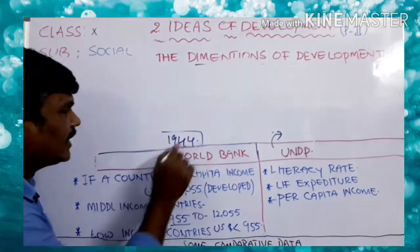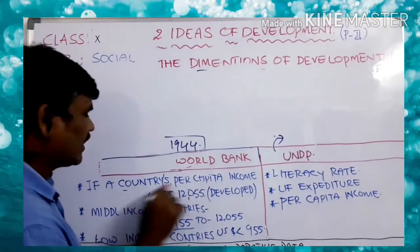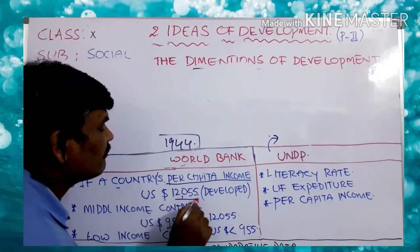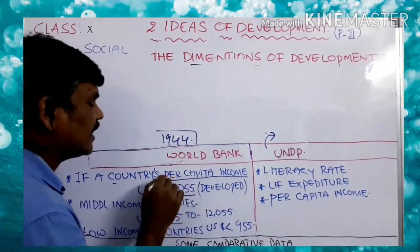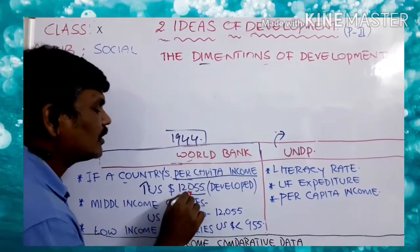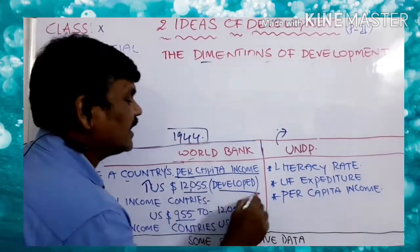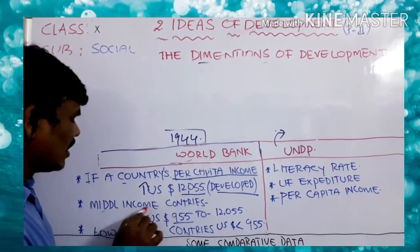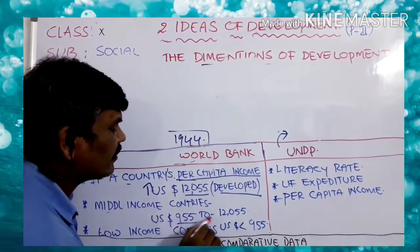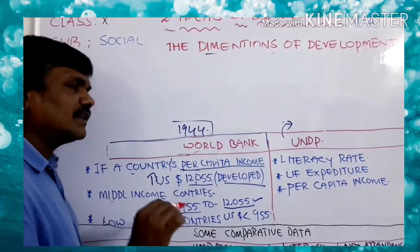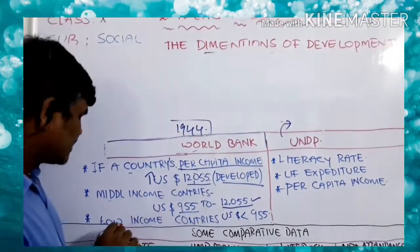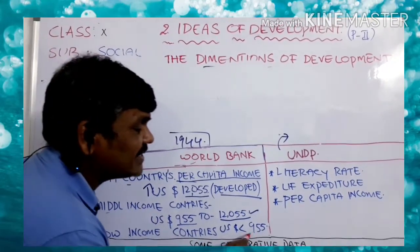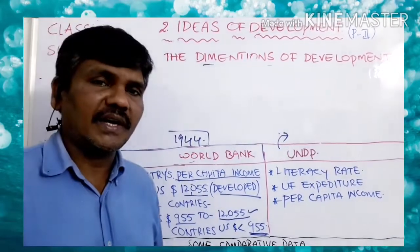According to the World Bank, if a country's per capita income is $12,055 and above, that country is a developed country. If a country's per capita income is between a mid-range and $12,055, it is called a middle-income country. If a country is earning less than $955, it is called an undeveloped country.